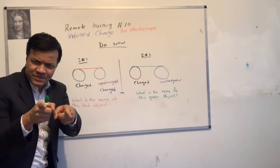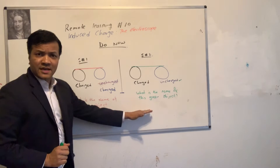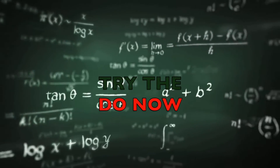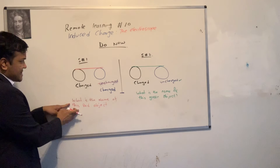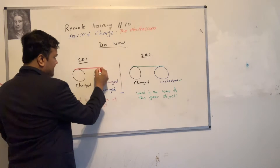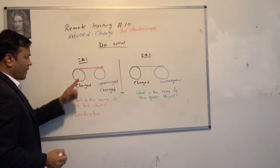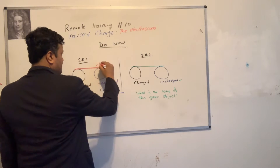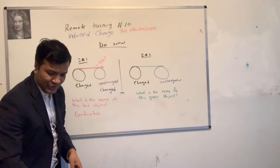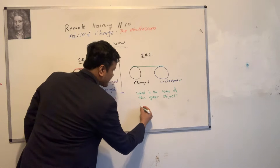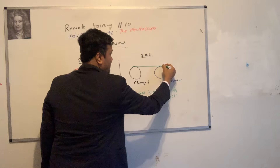Pause the video, do the brain storm, and write down the answer. Try your own. Now I'm going to give you the answer. This red object is a conductor — a nail. This green object is an insulator — an example of insulator is wood.